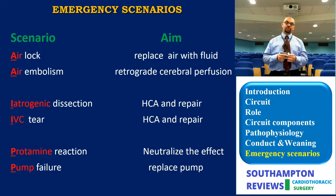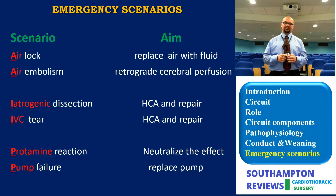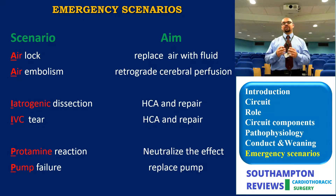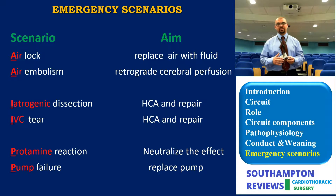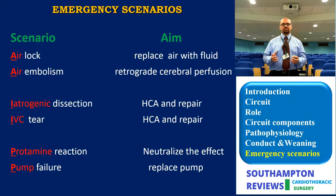The emergency scenarios include: airlock, air embolism, iatrogenic dissection (for instance IVC tear - which are the two biggest disasters in my view), protamine reaction, and pump failure. The main aim during airlock is to flush the air out with fluid. During air embolism, the aim is to establish retrograde cerebral perfusion to flush air out of the cerebral circulation. In iatrogenic dissection, you are trying to achieve circulatory arrest to repair it. In IVC tear you may fix a small tear quickly, but a large tear traveling to the abdomen will require circulatory arrest. In protamine reaction, you need to understand the type of reaction and neutralize its effect. In pump failure, you need to replace the pump.